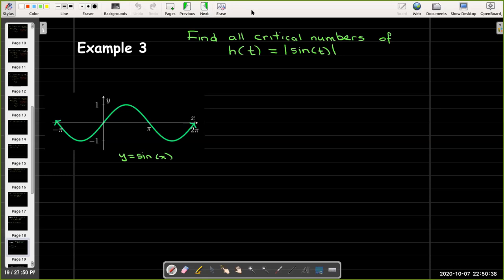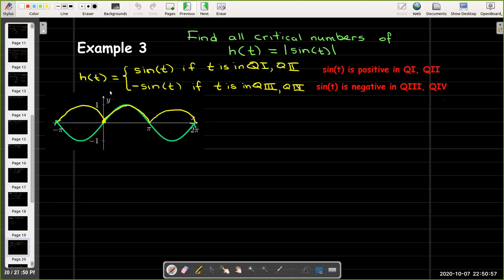Our last example asks us to find all critical numbers of h of t, which is the absolute value of sine of t. So let's think about that. We're taking sine of t and then the absolute value. So that means that h of t is going to be sine of t if t is in the first quadrant or the second quadrant.